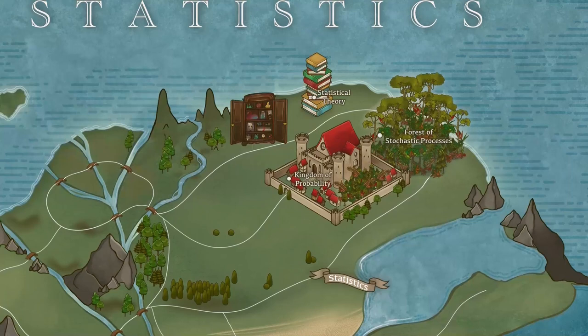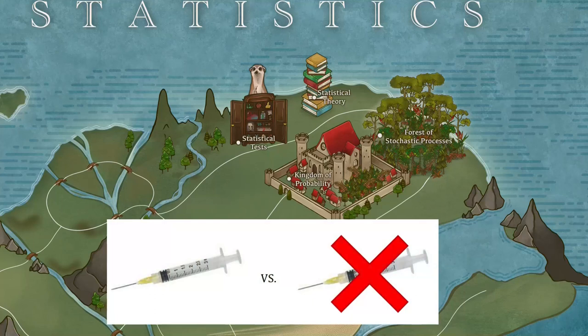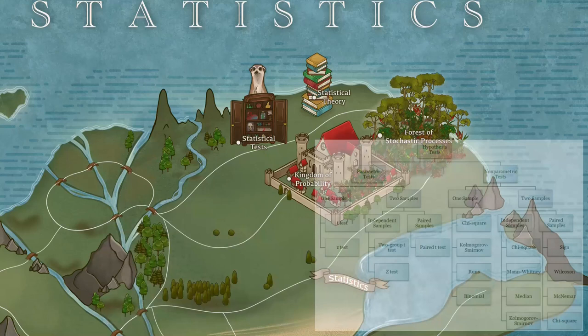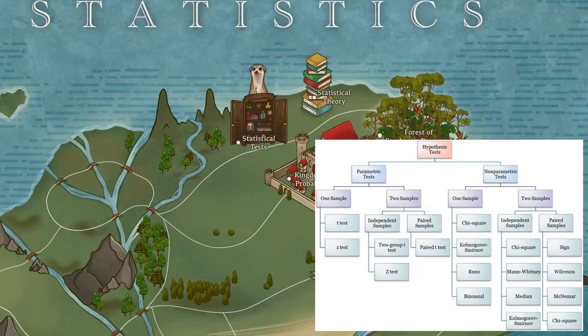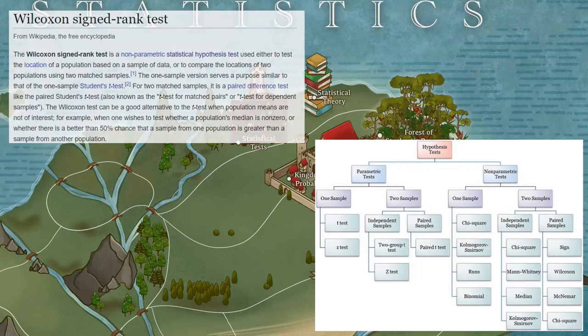Most scientific questions boil down to comparing the difference or correlation between groups. For example, does the group that got the new drug do better than the group that didn't? Statistical tests are ready-made off-the-shelf solutions for common problems. They can be divided into parametric tests — like the Z-test, T-test, ANOVA, etc. — which make some assumptions about the nature of the uncertainty of the problem, and non-parametric tests — like Wilcoxon, Kruskal-Wallis, chi-square, etc.